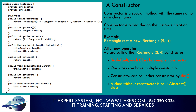By default, each class has an empty constructor. One class can have multiple constructors. A constructor can call another constructor using the 'this' keyword. A class without a constructor is called an abstract class.